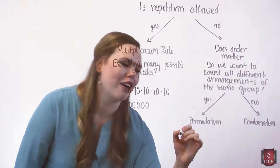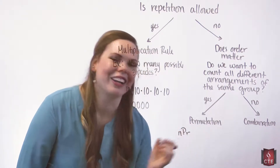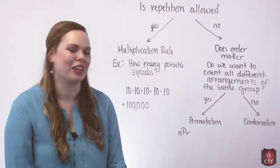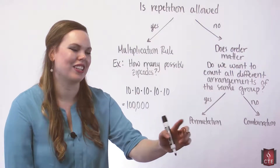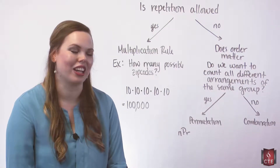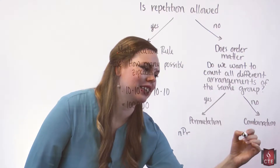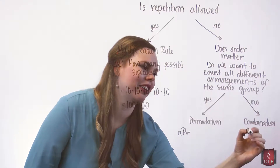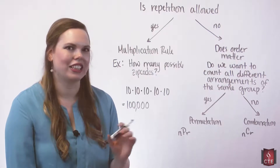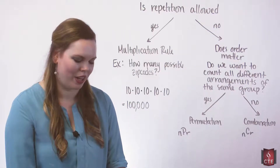Permutation we call, a lot of times in class, NPR. You can compute this in your calculator — the formula can just be entered in. And then combination is NCR. That's what you select in the menu on your calculator.